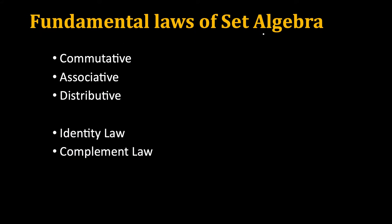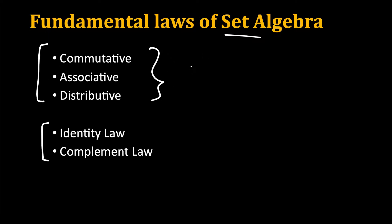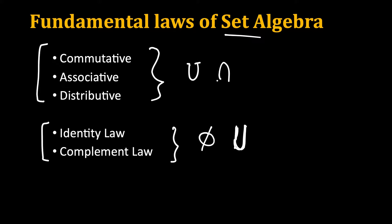Now let's see the fundamental laws of set algebra. We will cover five laws: commutative, associative, distributive, identity, and complement laws. The first three — commutative, associative, and distributive — mainly involve union and intersection operations, while the identity and complement laws depend on the null set and the universal set U. Note that this U refers to the universal set, not the union operation.